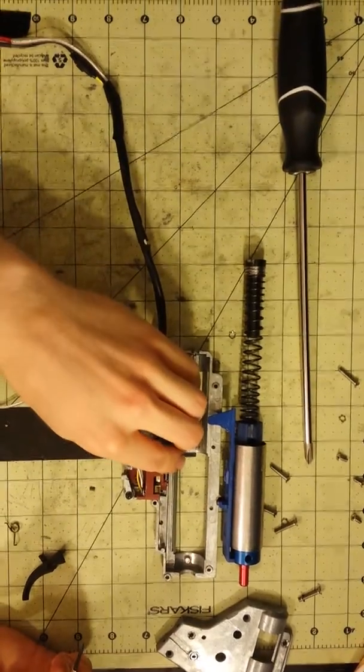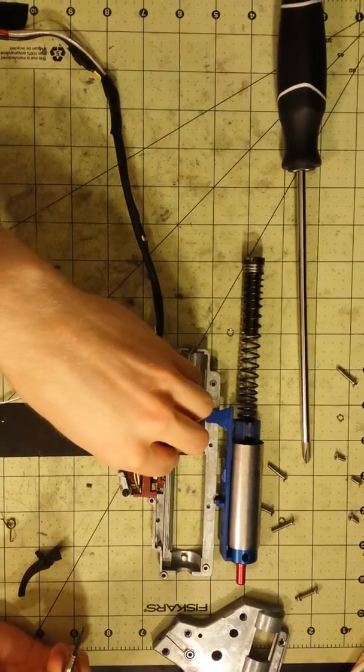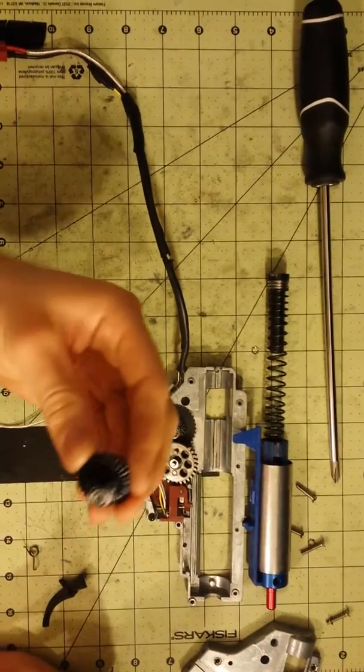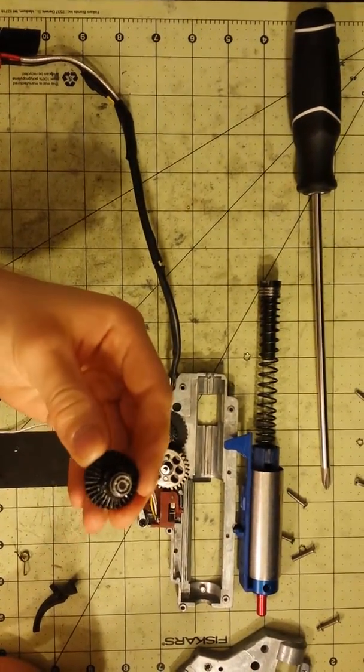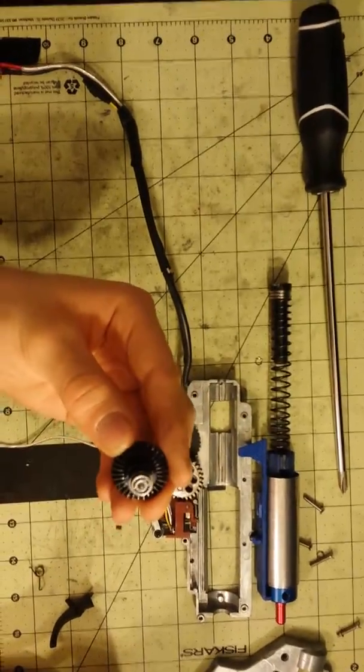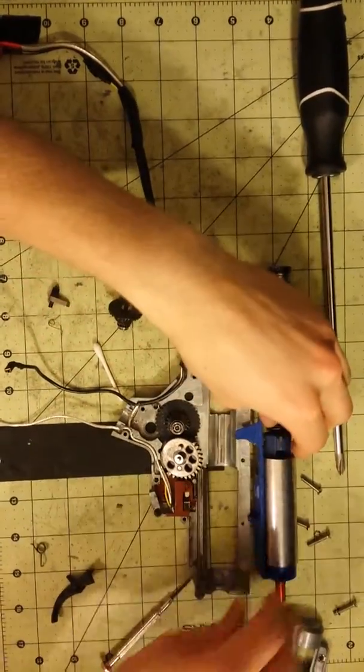Everything else is in perfect condition. Little metal shavings, probably from the pinion gear. I actually don't really know where those metal shavings are from at all, but everything else looks pretty good condition.